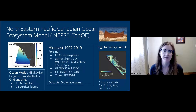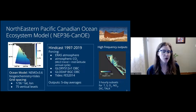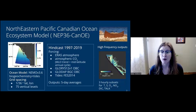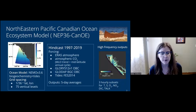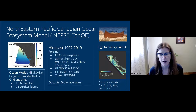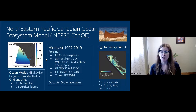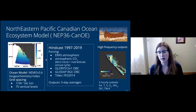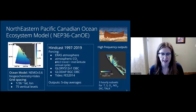To do this, we're using the Northeastern Pacific Canadian Ocean Ecosystem model, NEP 36 CANOE. This is an ocean model developed under NEMO version 3.6 with biogeochemistry — the Canadian Ocean Ecosystem model — originally developed by Jim Christian and others. We have tides, a grid spacing of 1/36-degree, and 75 vertical levels. The hindcast ran from 1997 to 2019 using ERA5 for the atmosphere. Atmospheric CO2 was imposed using the Mauna Loa trend plus mid-latitude annual cycle. GLORYS 1/12 version 1 was used at the open boundaries and GLODAP for BGC.